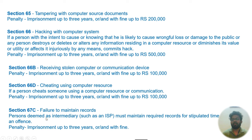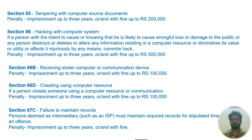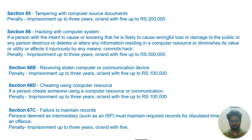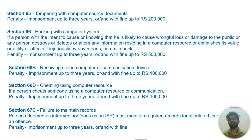Section 66D is commonly applied in cases of scams or relationship cheating. Section 67C: failure to maintain records — ISPs (Internet Service Providers) such as Hathway, ACT Fibernet, or BSNL are required to maintain records for a stipulated time. If they don't, it's three years of jail or a fine. This is meant to help trace back cybercrime, but many ISPs are not complying due to the cost and technical requirements.